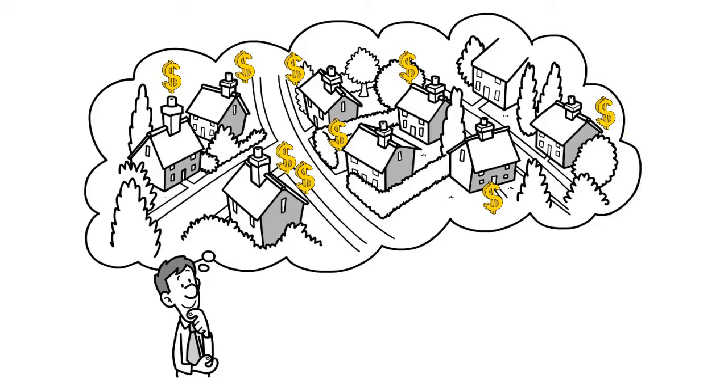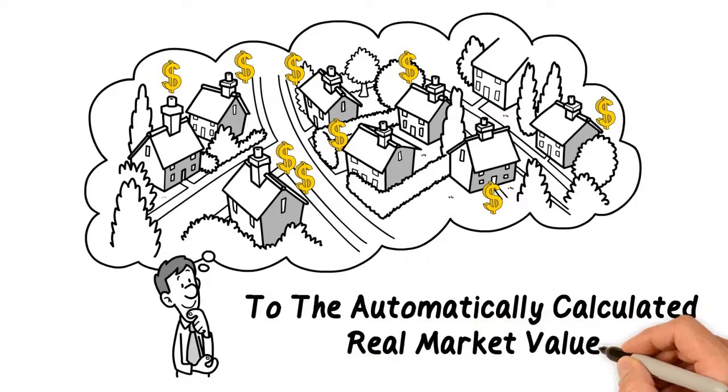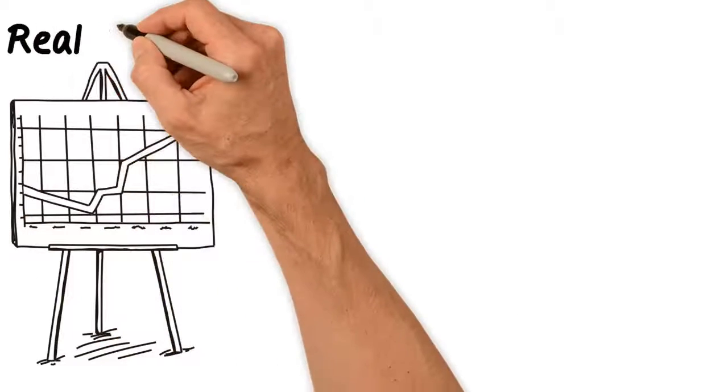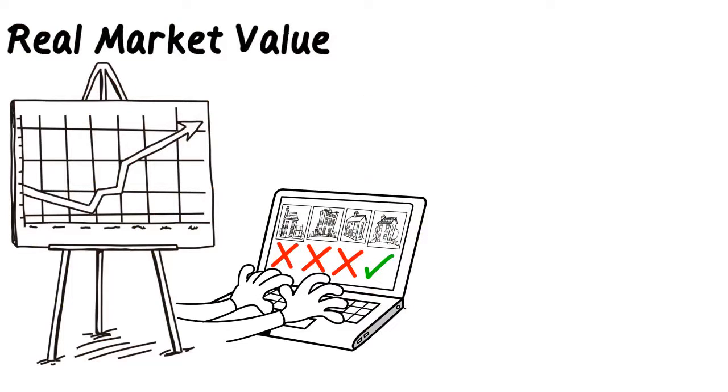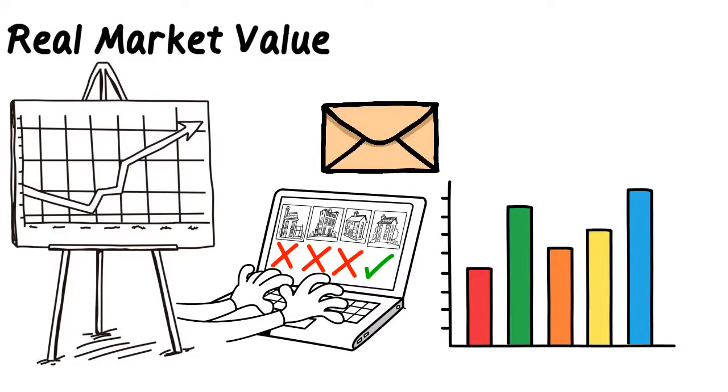It does this by comparing the property's list price to the automatically calculated real market value. If the real market value is significantly higher than the list price, the property qualifies as a high potential deal, and is automatically emailed to your inbox, along with an analytics report that includes both sold comps and lease comps.